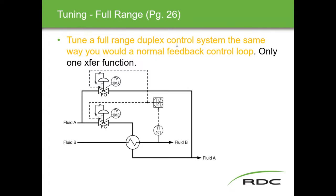To tune the full range duplex control system, you tune it the same way you would tune a normal feedback loop. There is only one controller, so there is really only one transfer function. Both loops are flow loops, so they are both fast — tune one, then tune the other; nothing fancy required.